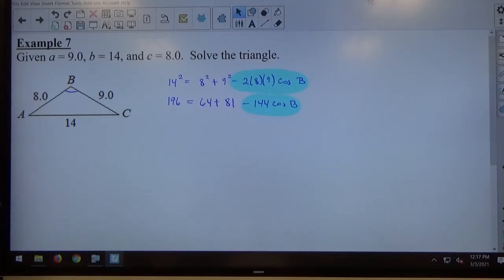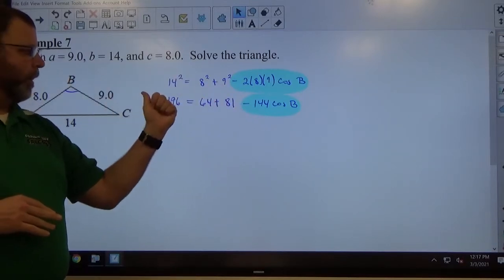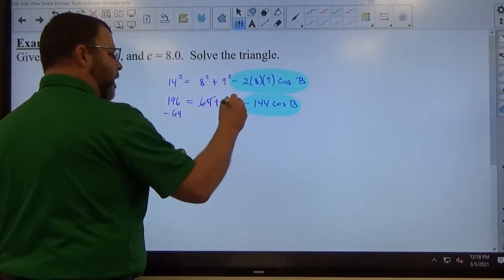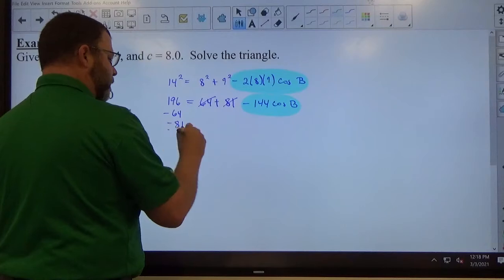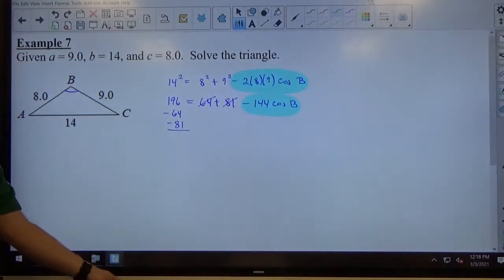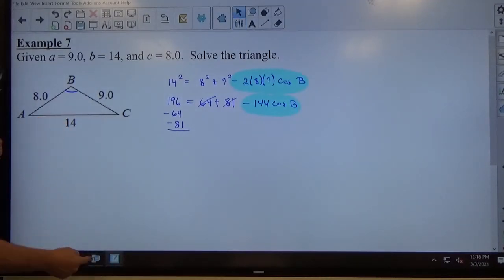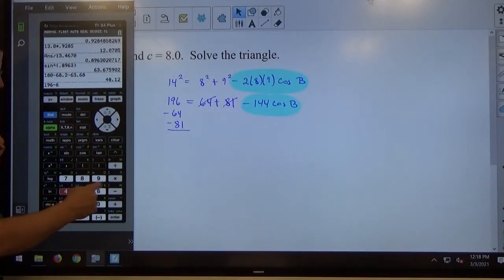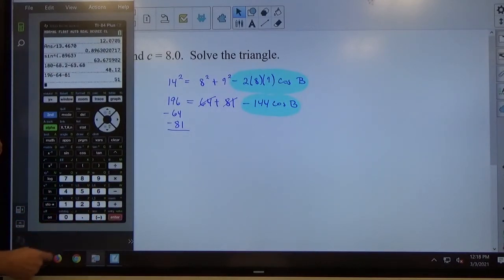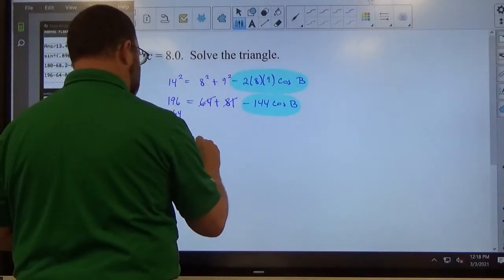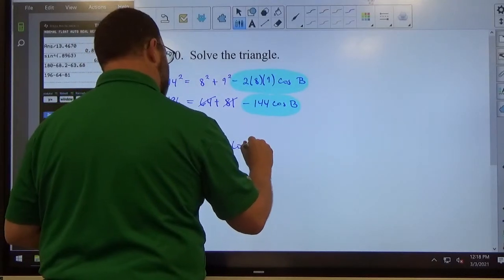Next, I want to get that thing all by itself, that highlighted blue guy all by itself. So I want to get anything that's not that over here. So I need to take the 64 and say minus 64. I need to take the 81 and say minus 81. I'm keeping the 144 attached to cosine of B because it's attached to cosine of B. It is negative 144 that's attached there. So 196 - 64 - 81 equals, comes out to 51. So positive 51 on this side equals negative 144 cosine of B on that side.